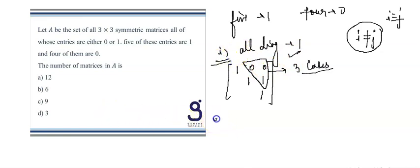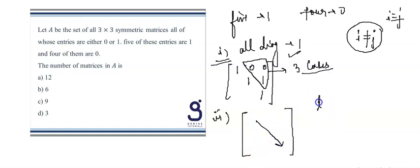Now in the second case, let us consider that two entries of the diagonal are zero. We cannot have just one diagonal entry as zero, because then we would be left with an odd number of zeros off-diagonal, which is not possible for a symmetric matrix. So in the second case, two diagonal entries are zero.